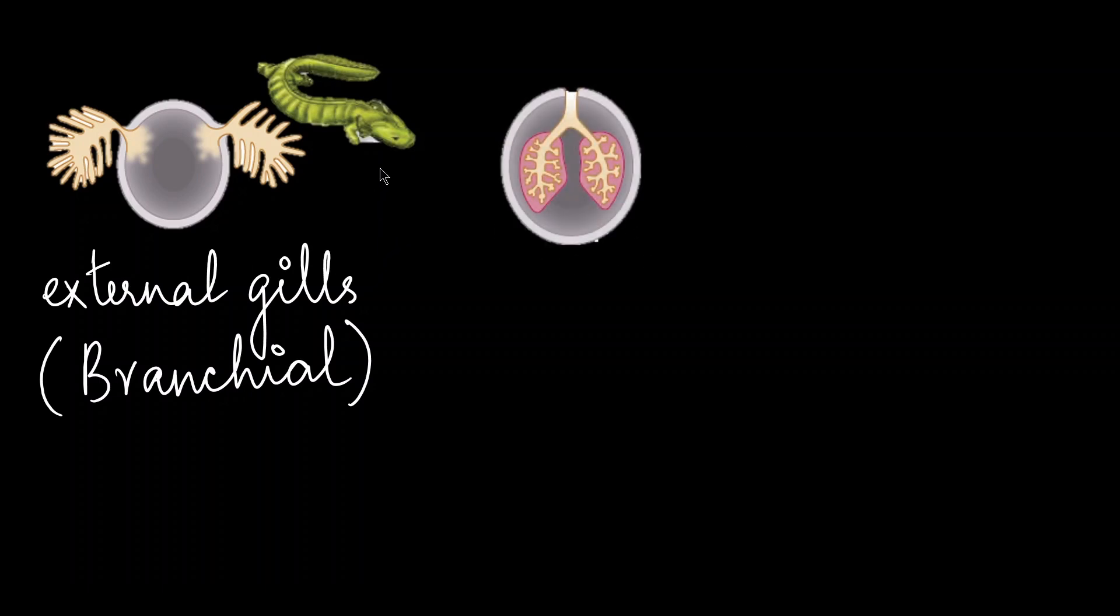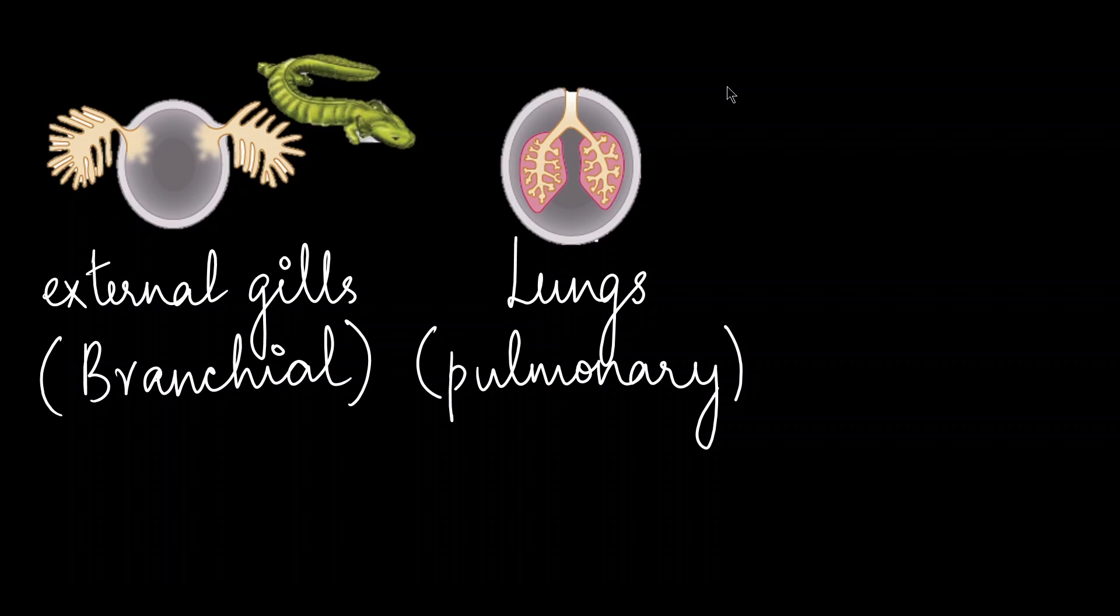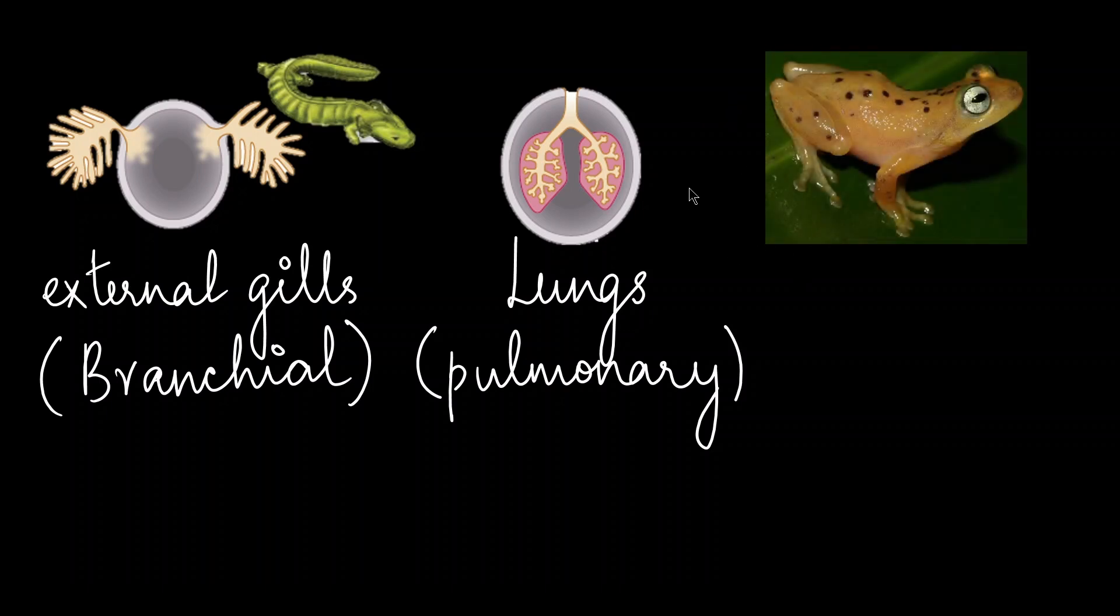Amphibians respire by different structures. The external gills are projections from the body and they are highly folded. So this increases the surface area that is available for oxygen exchange or gas exchange. This type of respiration is called branchial respiration. This is usually seen in aquatic amphibians. Next we have the lungs. These are sac-like structures where the oxygen exchange happens. This is called pulmonary respiration.